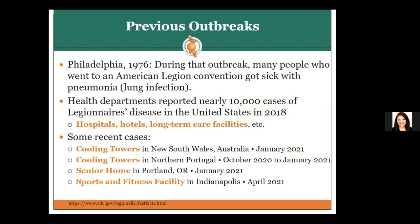Legionella first came into the spotlight in 1976 at an American Legion convention held in Philadelphia, where many senior attendees got sick with pneumonia and were later diagnosed with a bacterial infection. The bacteria was named Legionella pneumophila because it was found at that convention and caused pneumonia. Health departments reported nearly 10,000 cases in 2018 alone. Most cases occur when people contract the disease from hospitals, hotels, and long-term care facilities. Some recent outbreaks have been associated with cooling towers, senior homes, and sports and fitness facilities.